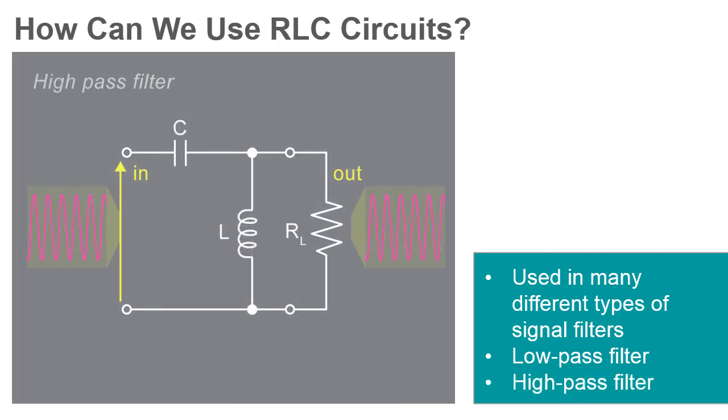A high-pass filter typically has the capacitor C in series with the resistor R, and the coil L in parallel with the resistor.